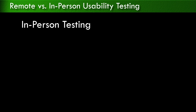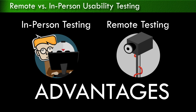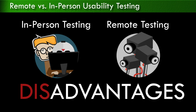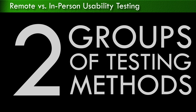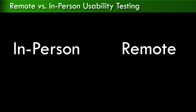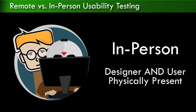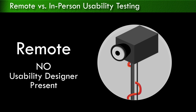Today, we'll focus on in-person and remote testing by examining the advantages and disadvantages of each. While there are many different methods of usability testing, they all fall into one of two groups: in-person or remote. Any time you have a user physically present, it's considered in-person testing. Remote testing includes any tests that take place without a usability designer present.